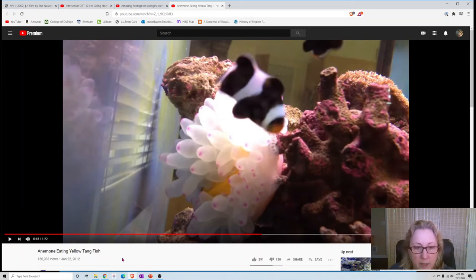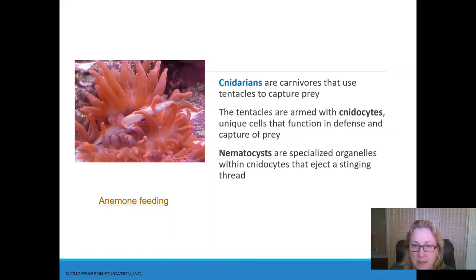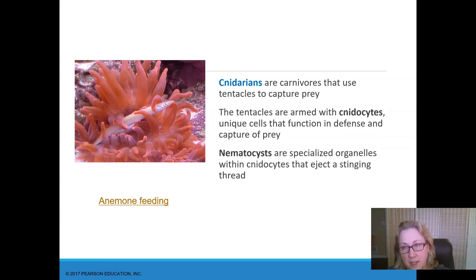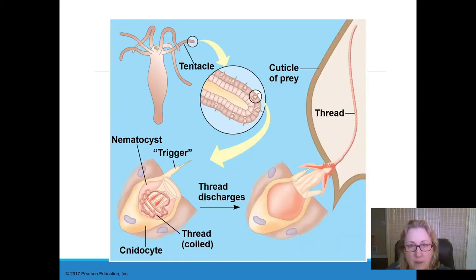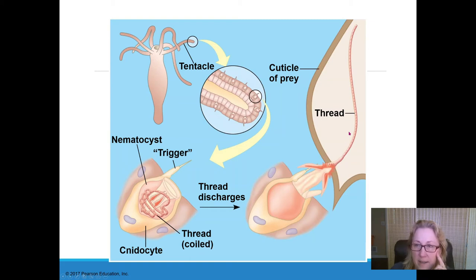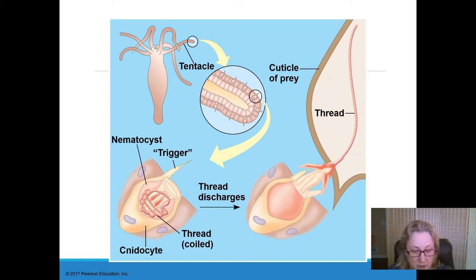Cnidarians have a one-opening gut, meaning they have no anus. Their mouth and anus are the same opening — food goes in, and anything that doesn't get digested comes back out the same opening. The cnidocyte is the whole cell, and the nematocyst is the part of the cell with a little thread that can evert, eject, and inject the fish with a bit of toxin to paralyze it, preventing damage to the jellyfish or anemone since they're quite fragile.